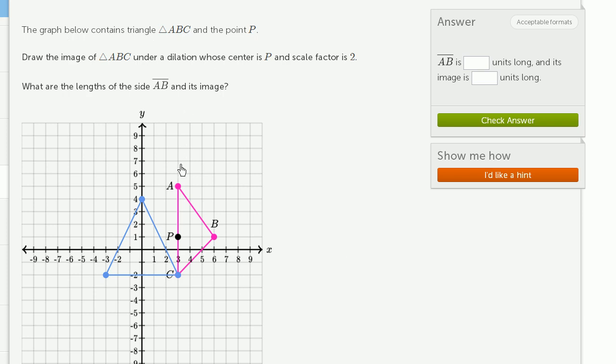The graph below contains triangle ABC and the point P. Draw the image of triangle ABC under dilation whose center is P and scale factor 2. So essentially, we want to scale this so that every point is going to be twice as far away from P.